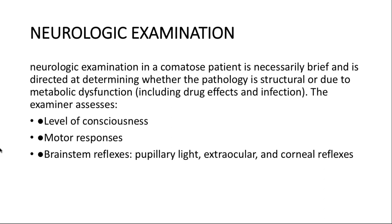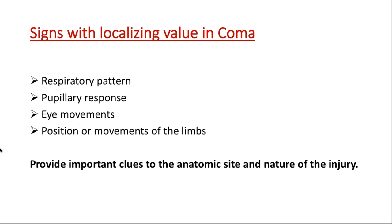Neurological assessment of a comatose patient differs in that the patient is not cooperative. We start with level of consciousness, go through brainstem reflexes, and assess motor tone, deep tendon reflexes, and responses to pain. For level of consciousness, we use a graded stimuli manner — calling the patient by name, then raising the voice. This helps differentiate mimics such as locked-in syndrome from basilar artery stroke, where intact eye movement and blinking can distinguish a genuine coma from a mimic.